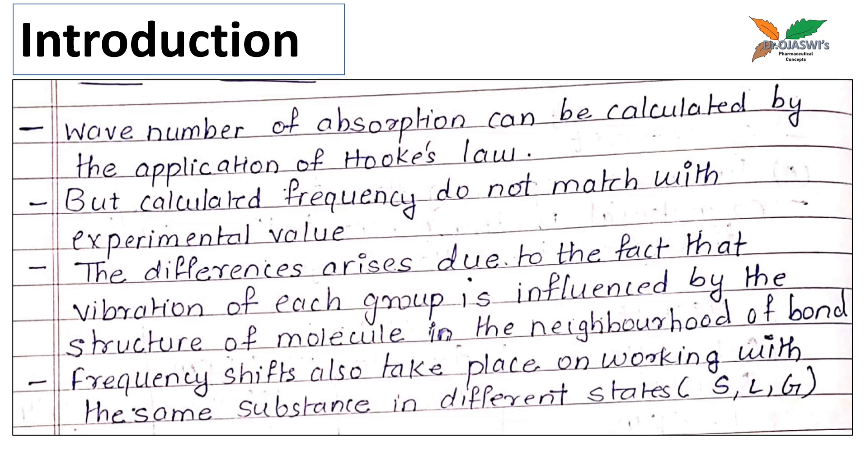It is possible to calculate the approximate vibrational frequency of a bond so that we can predict at which position the IR absorption band will appear in the spectrum. The approximate vibrational frequency of a bond can be calculated by using the equation which is derived from Hooke's law.